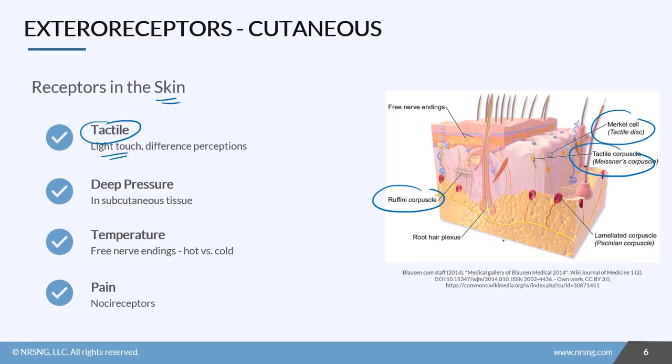We also have receptors in our subcutaneous tissue that help us respond to deep pressure. And then we have free nerve endings that are going to help us respond to temperature, so changes in temperature, telling the difference between hot and cold, et cetera. And then finally we have another type of free nerve ending called nociceptors that help us respond to pain, specifically in this case we're talking about in our skin.